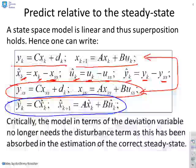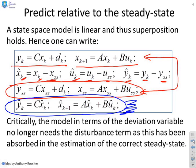Y hat equals CX hat and X hat_{k+1} equals AX hat_k plus BU hat_k. Why is that significant? Because you'll notice that this new model in the blue circle has no disturbance anymore. The disturbance has been absorbed in the definition of the deviation variables. And that's going to make my algebra somewhat simpler.